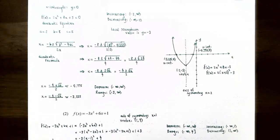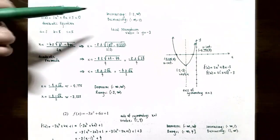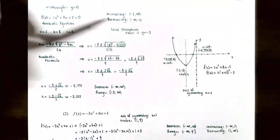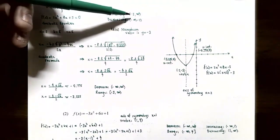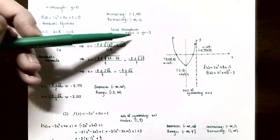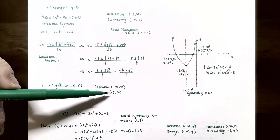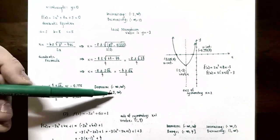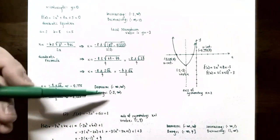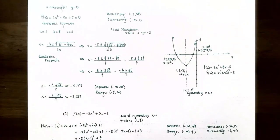Since the graph opens upward, it is decreasing on (−∞, −2) and increasing on (−2, ∞), where −2 is the x-coordinate of the vertex. The vertex (−2, −3) is the local minimum, so the minimum y-value is −3. The domain is (−∞, ∞) and the range is [−3, ∞).